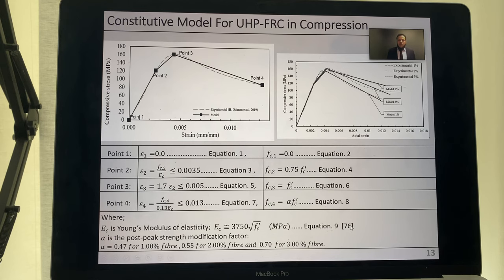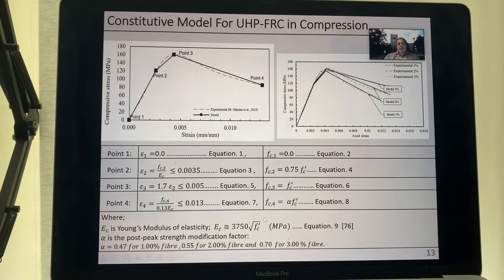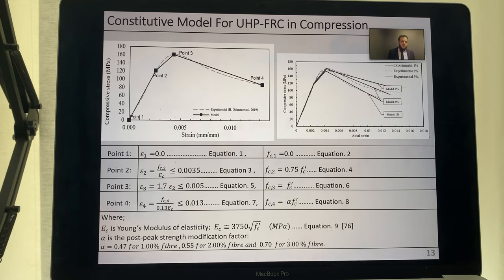Dr. Youssef also noted that the Young's modulus equation used — 3,750 times the square root of f'c — seems very low for ultra-high-performance concrete. The candidate referenced a Federal Highway Administration state-of-the-art report that used the same equation. Dr. Youssef asked what the initial Young's modulus would be for normal concrete using that formula, and the candidate estimated around 20,000 to 25,000 MPa.